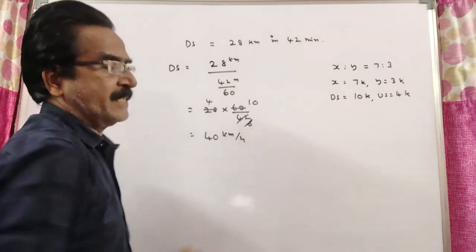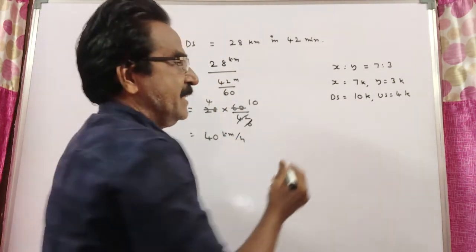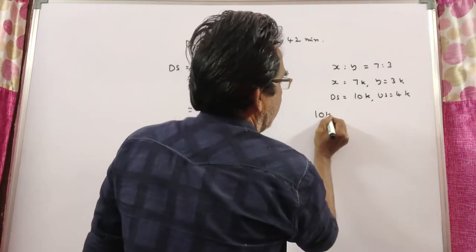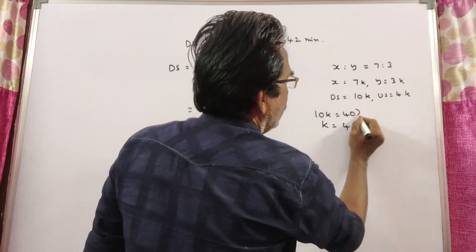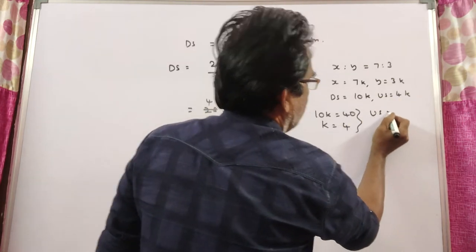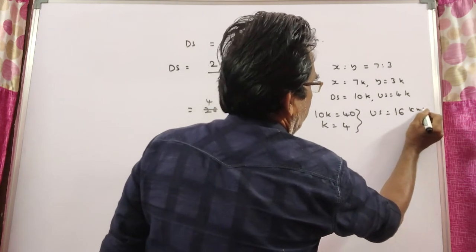Downstream velocity is 40 kilometers per hour. We know downstream velocity is 10k. So 10k is equal to 40, k is equal to 4. k equals 4 implies upstream velocity, 4k, that is 4 times 4, 16 kilometers per hour.